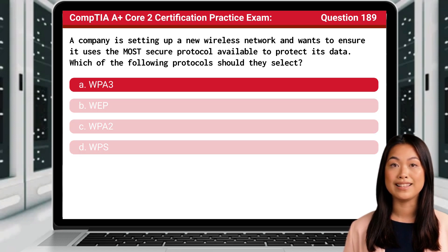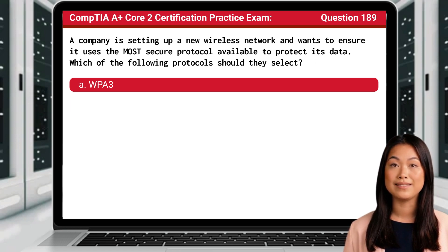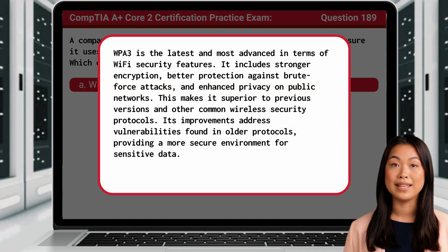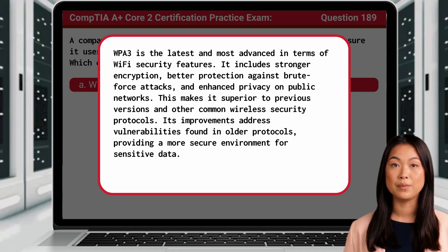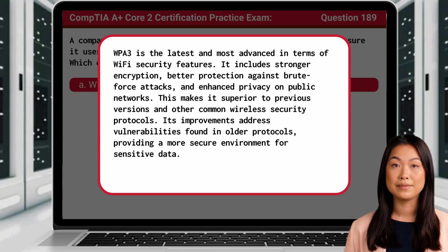The answer is A: WPA3. WPA3 is the latest and most advanced in terms of Wi-Fi security features. It includes stronger encryption, better protection against brute force attacks, and enhanced privacy on public networks. This makes it superior to previous versions and other common wireless security protocols. Its improvements address vulnerabilities found in older protocols, providing a more secure environment for sensitive data.